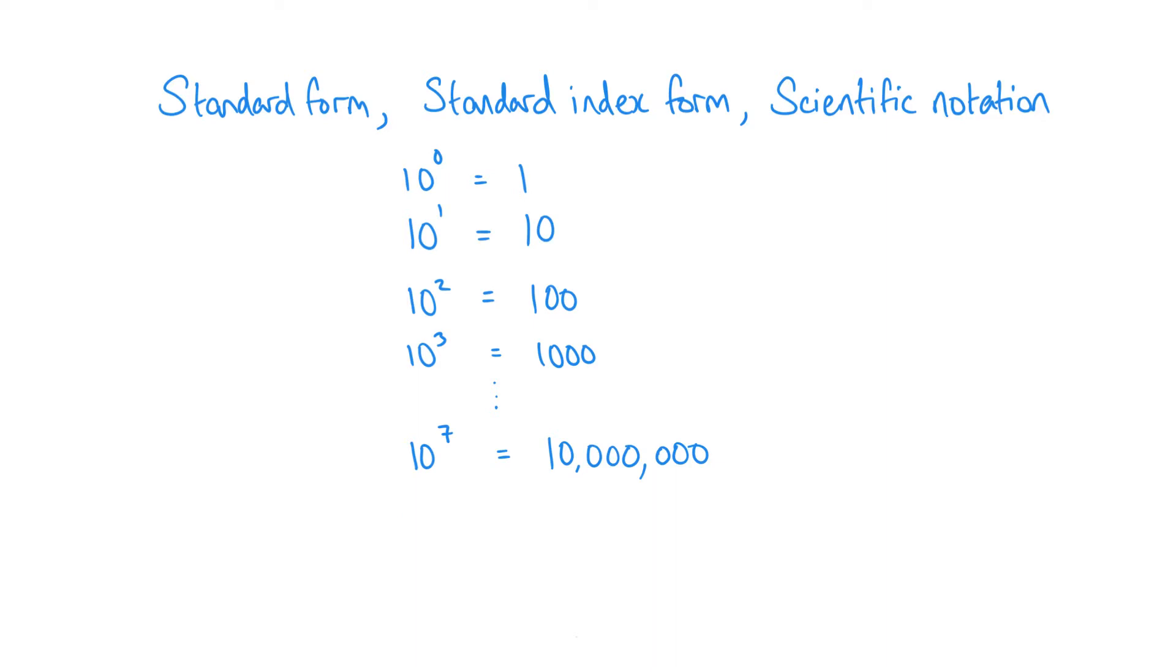So that means if, for example, I had something like 6.5 multiplied by 10 to the power of three, you would realize that this is actually just 6.5 multiplied by 1000. And multiplying by 10 or 100 or 1000 and so on is easy. This is just going to give us 6500.